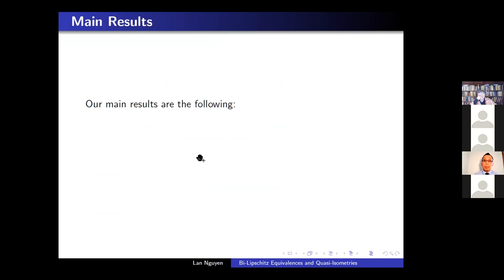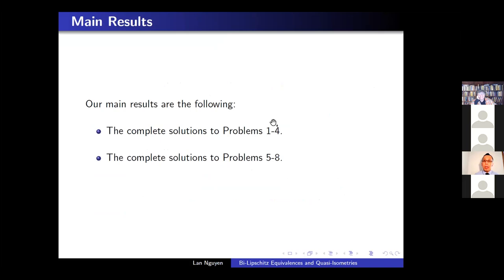Our main results are the following: the complete solution to problems 1 through 4, and the complete solution to problems 5 through 8. The solution for problems 1 through 4 alone is roughly around 260 to 270 pages long and is currently under review by various journals. Because of its length, it is not practical to go through the full proof, so instead I will boil down to two or three core ideas that make the solution possible, and then show the statements of the results and their current status.